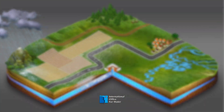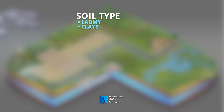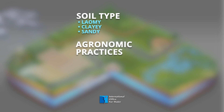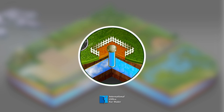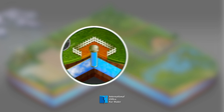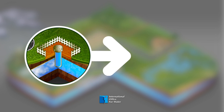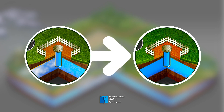In conclusion, depending on the type of soil, agricultural practices, characteristics of the pollution, and duration and frequency of use, pollution will reach the water reserves and be pumped from the catchment. Thankfully, water pollution can be limited.